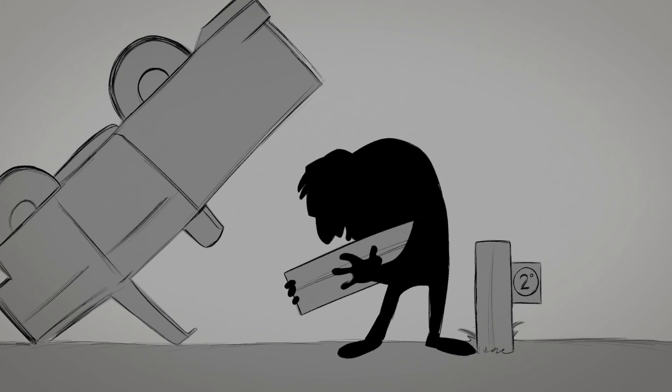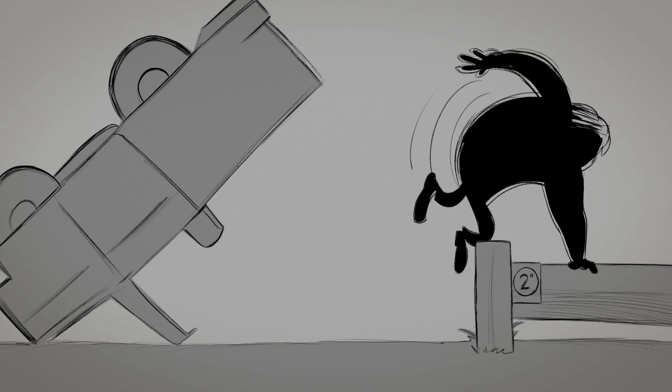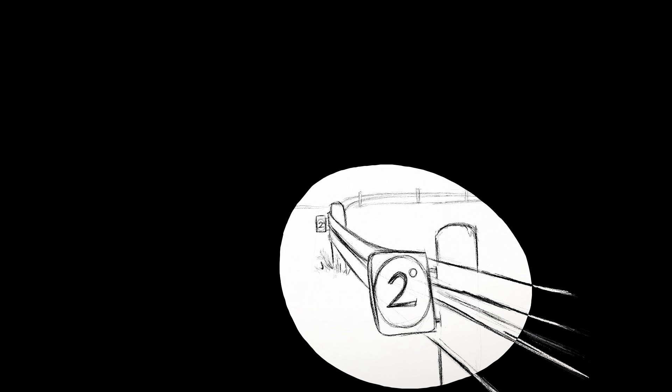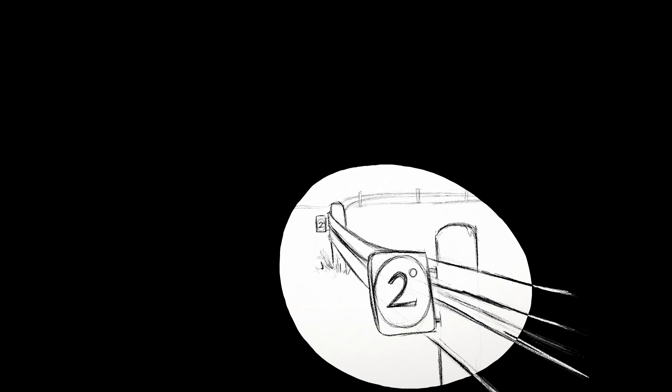The WBGU has defined planetary guardrails, which help to keep such existential damage at bay. For example, to avoid dangerous changes in the climate, we should limit global warming to less than 2 degrees compared to the pre-industrialization period.